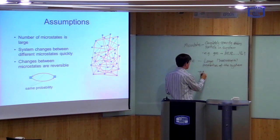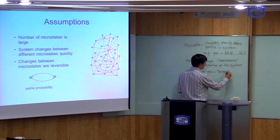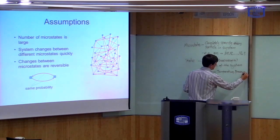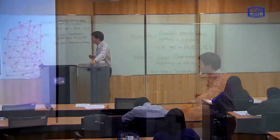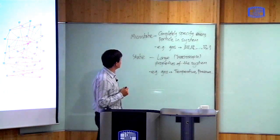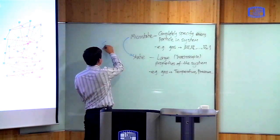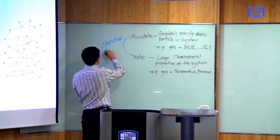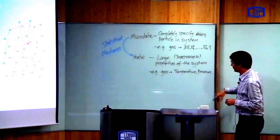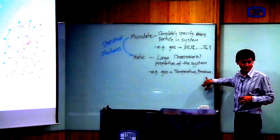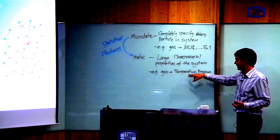Whereas the state, in this technical sense, is those properties of the system which you can see on a large scale — the technical word is macroscopic properties. For a gas, these are things like the temperature of the gas, the pressure of the gas, the energy of the gas. The whole point of statistical mechanics is to give you a way of going from the statistics of the microstate into the behavior of the state. If you tell me the velocities at a certain point in time, how can I calculate from that information the temperature and the pressure of the system? That's the goal.